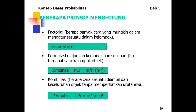Prinsip menghitung: pertama, faktorial — berapa banyak cara yang mungkin dalam mengatur sesuatu dalam kelompok, yaitu N faktorial. Kedua, permutasi — sejumlah kemungkinan susunan jika terdapat satu kelompok objek, rumusnya NPR = N! / (N−R)!. Ketiga, kombinasi — beberapa cara menarik keseluruhan objek tanpa memperhatikan urutannya, rumusnya NCR = N! / (R!(N−R)!).